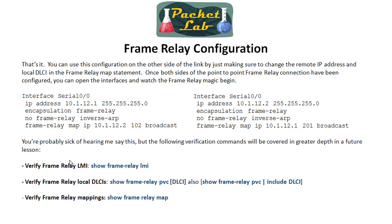These verification commands will be covered in more detail in another lesson, but get familiar with them. Show frame-relay lmi shows you LMI statistics, which you also get with the show interfaces command. Show frame-relay pvc is a big one — it shows you what your local DLCIs are, what the Frame Relay switch is advertising to you via LMI. Check LMI first to make sure it's up, then see what PVCs (DLCI numbers) you're getting from the Frame Relay switch. Finally, verify your mappings with show frame-relay map — this is where a lot of trouble starts if you've mapped the wrong address to the wrong DLCI.